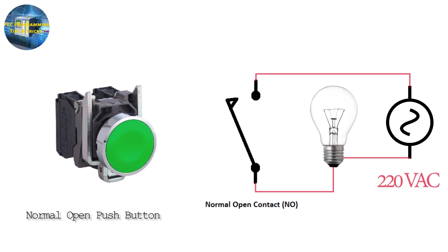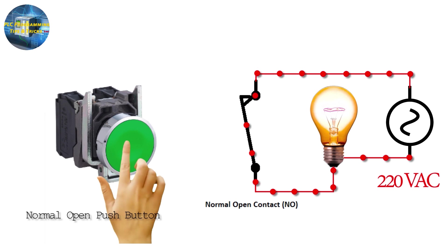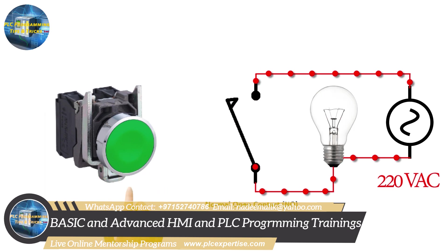Now let's understand the normal open pushbutton with an example by putting it in series with a bulb and a power source. If we press the pushbutton it will close the NO contacts, the current path completes, and current starts to flow through the circuit and the bulb turns on. If we release the pushbutton the NO contacts open again, the current path breaks, and the bulb turns off.